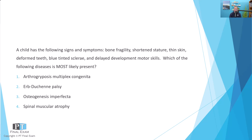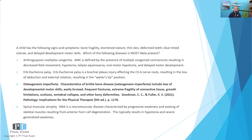The answer options are: one, arthrogryposis multiplex congenita; two, Erb's Duchenne palsy; three, osteogenesis imperfecta; and four, spinal muscular atrophy. All of these signs and symptoms lead directly towards the diagnosis of osteogenesis imperfecta.